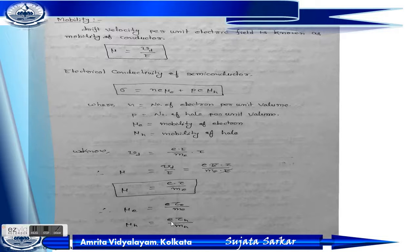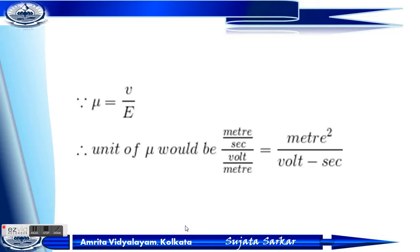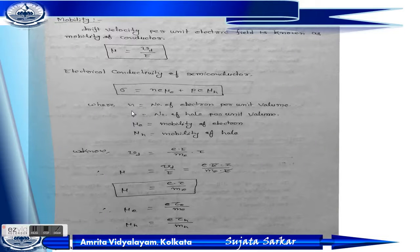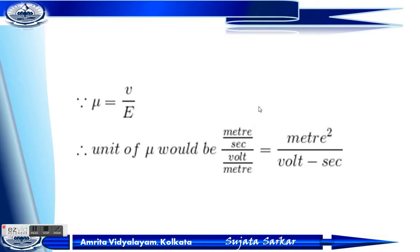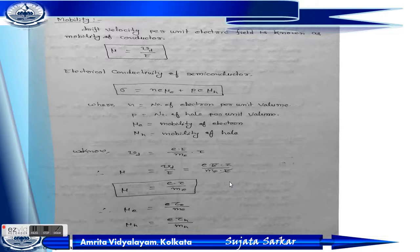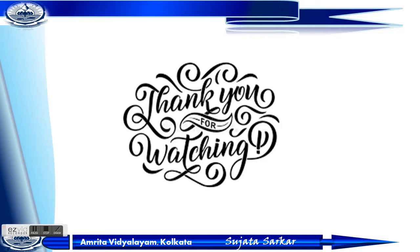Now we will learn the unit of mobility. Since mobility μ = drift velocity / electric field, the unit of velocity is meter per second and the unit of electric field is volt per meter. After calculating, we get the unit of mobility as meter squared per volt per second (m²/V·s). This is all about mobility and drift velocity. Thank you students for watching this video.